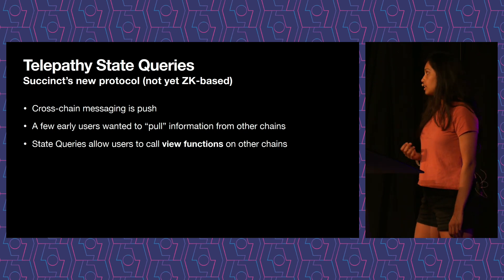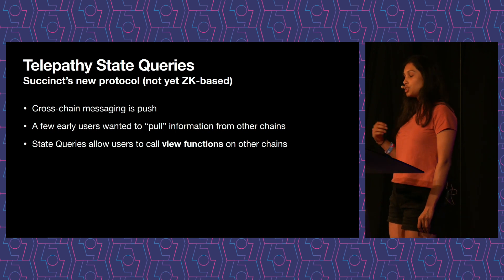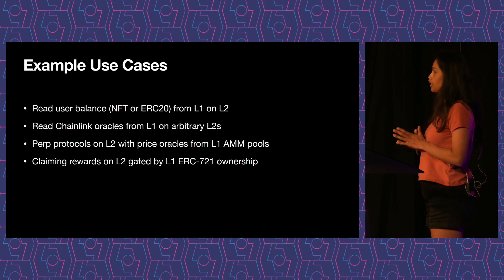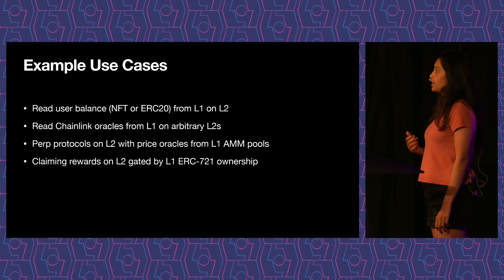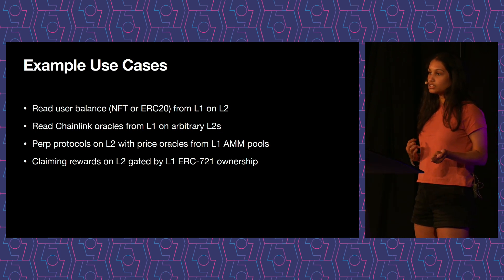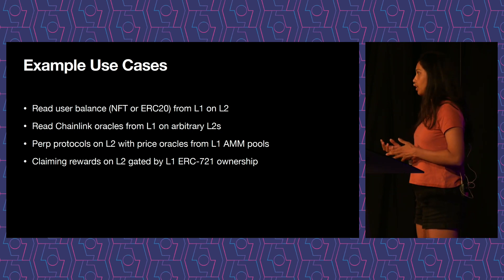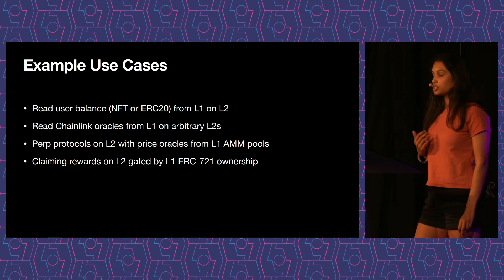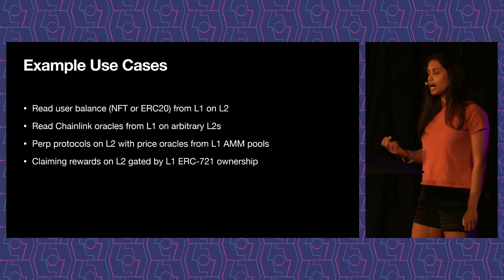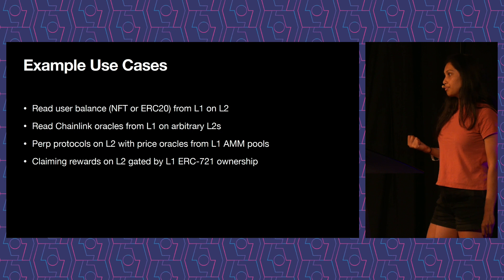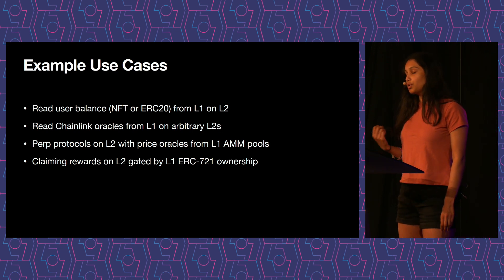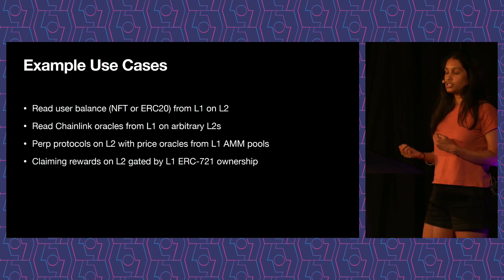State queries allow users to call view functions on other chains during the course of executing on a given chain. One common use case is conducting voting on L2, where it's much cheaper than L1, but gating that voting by the user's balance on L1 — for example, token-weighted voting where the token or NFT lives on L1. A concrete example: NounsDAO is an NFT that lives on L1 with a very active community, but voting costs around $20. They're looking at doing voting on L2, but the nouns live on L1, so they need to understand each user's noun balance on L1.